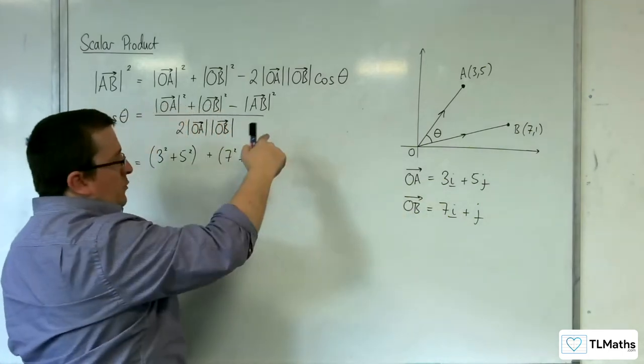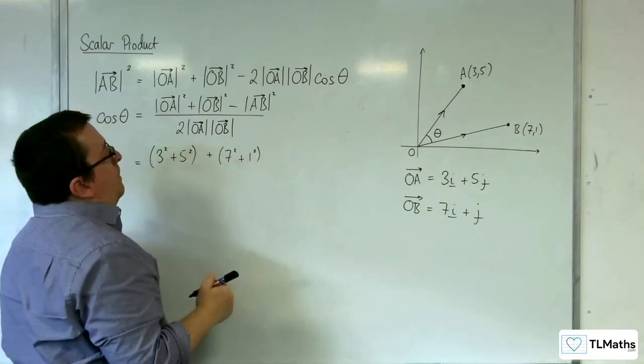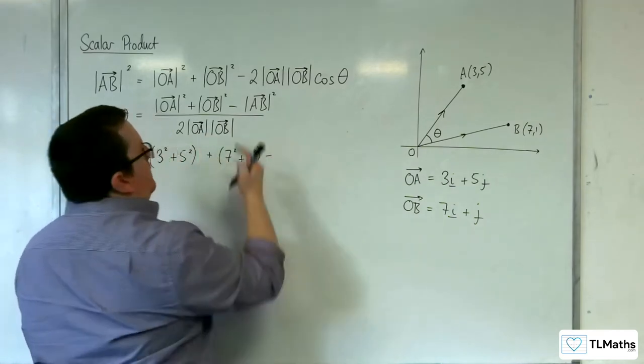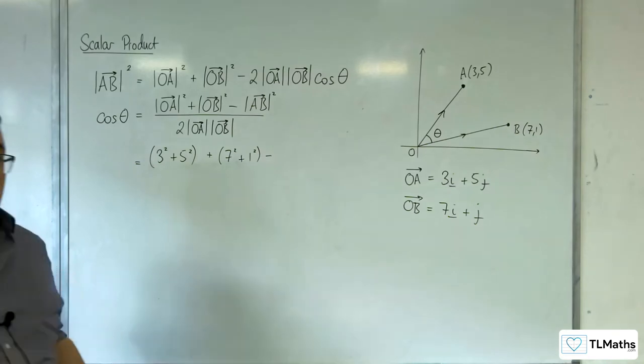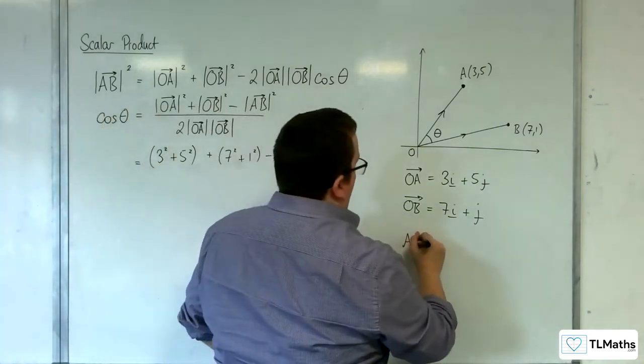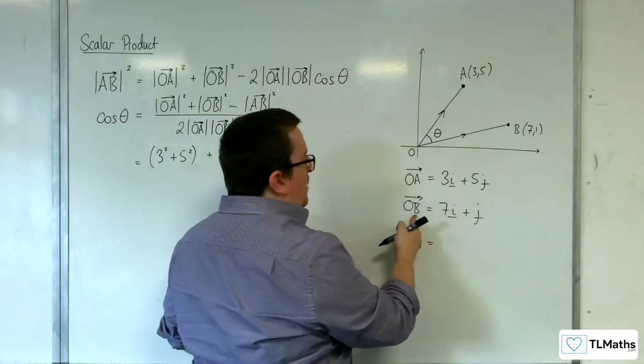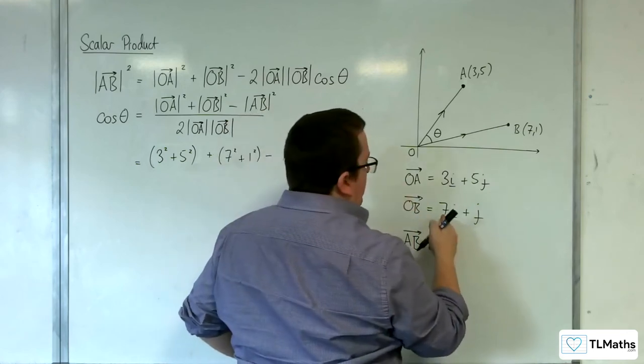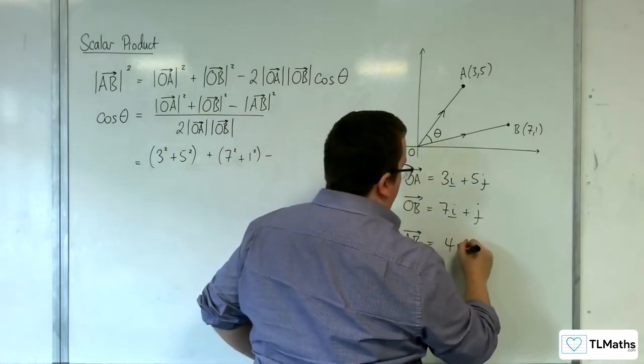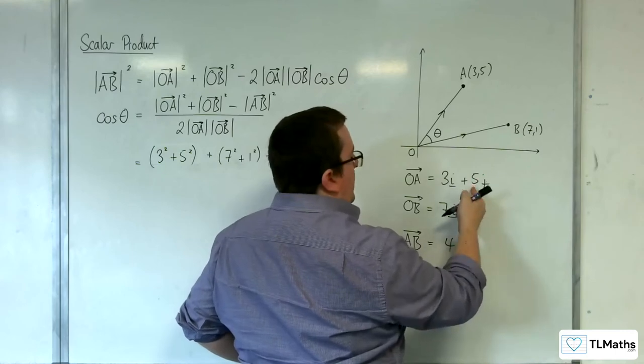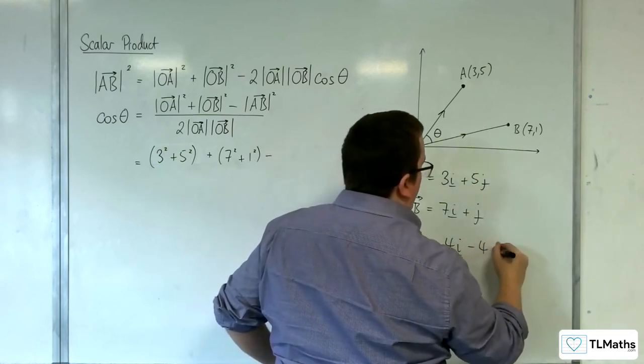Take away AB squared. So we're going to need to work out AB. So AB is equal to OB minus OA, so 7 take away 3, 1 take away 5, so 4i minus 4j.